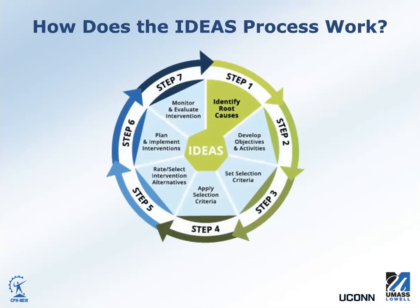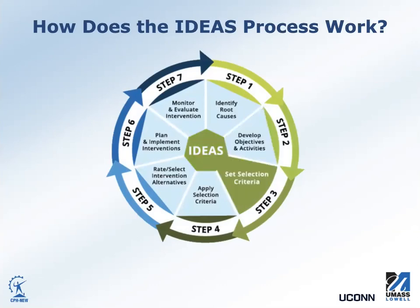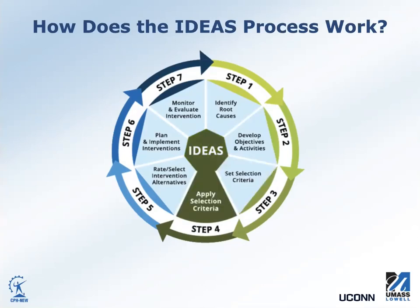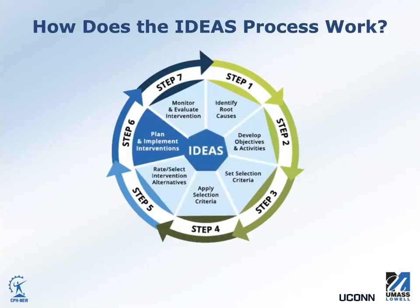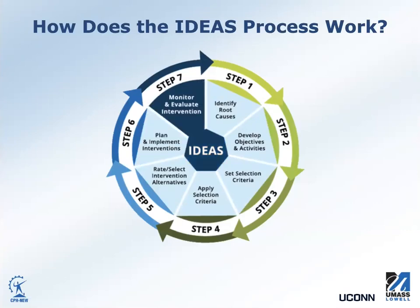The IDEAS 7 steps include: Step 1 — Identify root causes; Step 2 — Develop measurable objectives and solution activities; Step 3 — Set criteria for selecting and evaluating interventions; Step 4 — Form interventions and apply selection criteria; Step 5 — Rate and select intervention options; Step 6 — Plan and implement interventions; Step 7 — Monitor and evaluate interventions. IDEAS steps 3 and 5 are times the design team and steering committee should meet and work together.